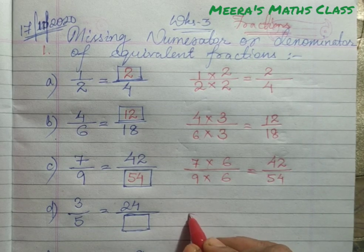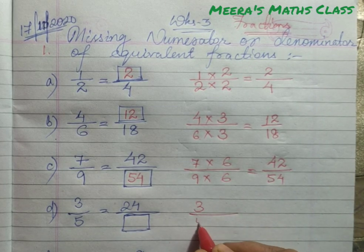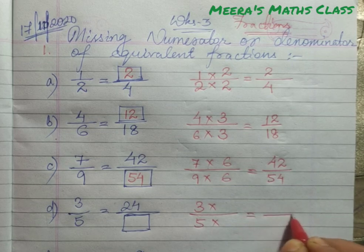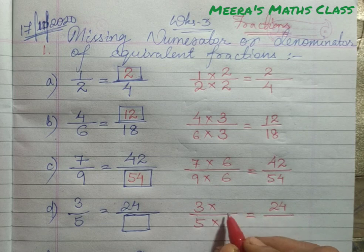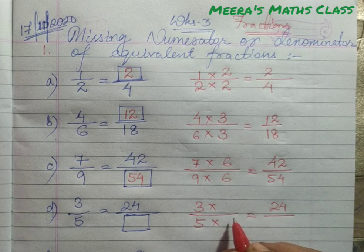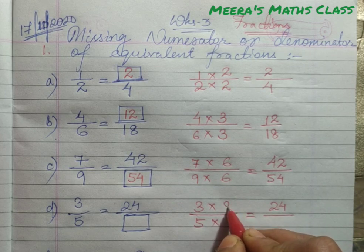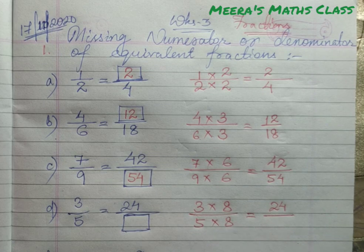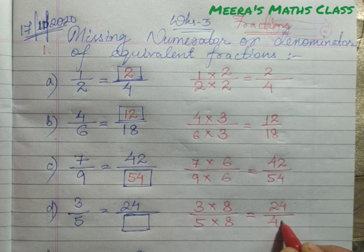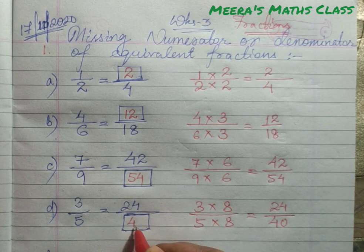Similarly, we are going to multiply to get the numerator as it is already given: 24. How much are we going to multiply the numerator to get 24? 3 eights are 24. So we are going to multiply the same 3 to the denominator: 5 eights are 40. So this becomes 40.